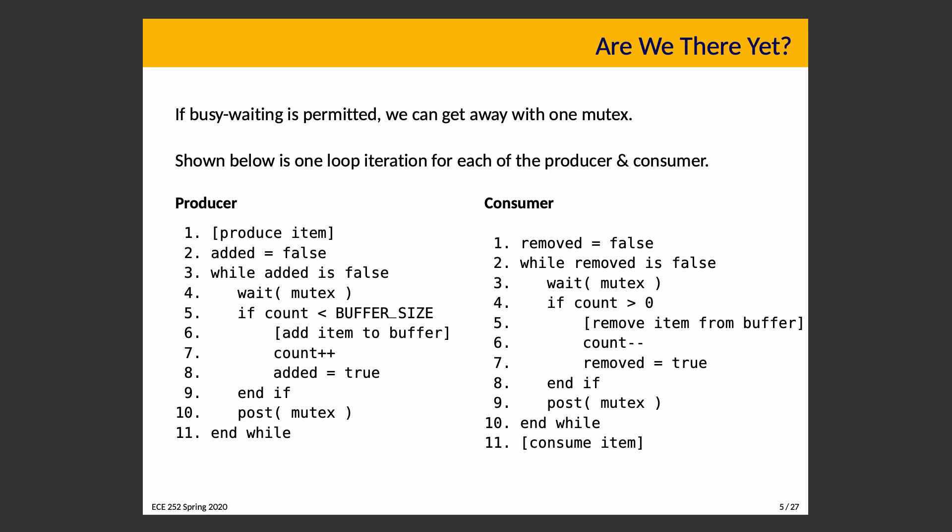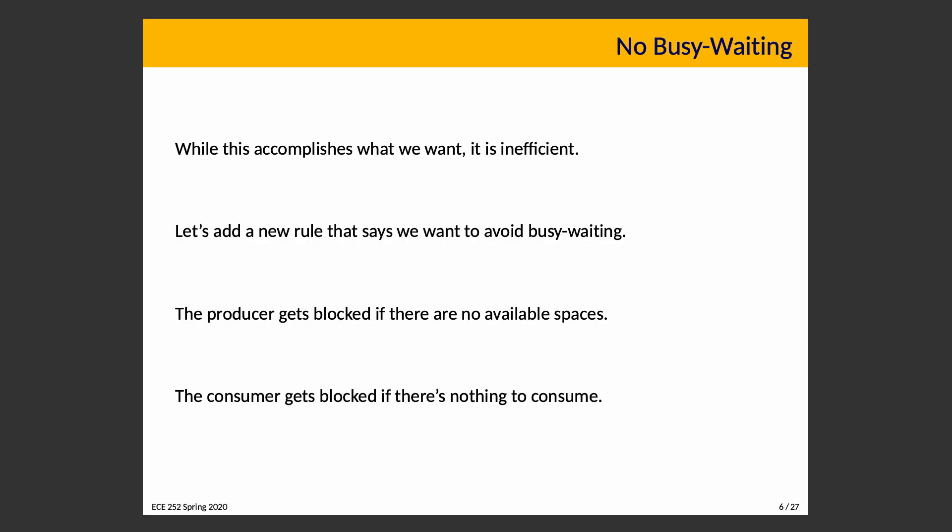We've agreed that we want a non-busy-waiting solution because this is inefficient and wastes a whole bunch of CPU time. The behavior we actually want is that the producer gets blocked if there are no available spaces, and the consumer gets blocked if there is nothing to consume. How do we go about that?